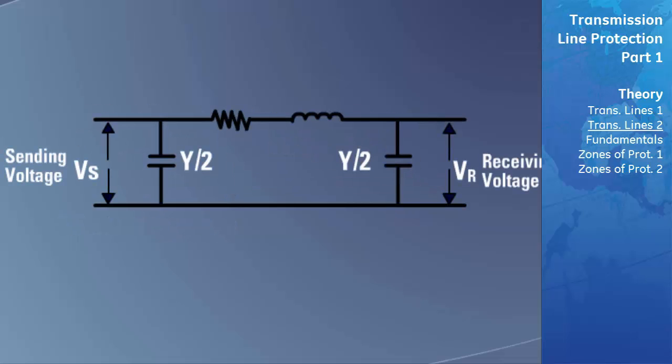When the current or voltage levels need to be accurately calculated at a specific point on the line, the protection engineer needs to draw an equivalent model of the transmission line. Different models of transmission lines are used for different lengths of line. These models are in three categories: short, medium, and long lines.